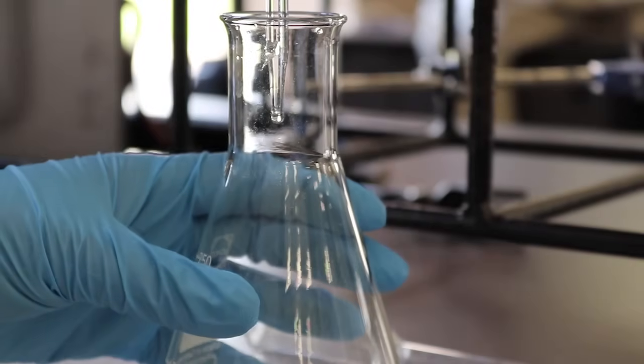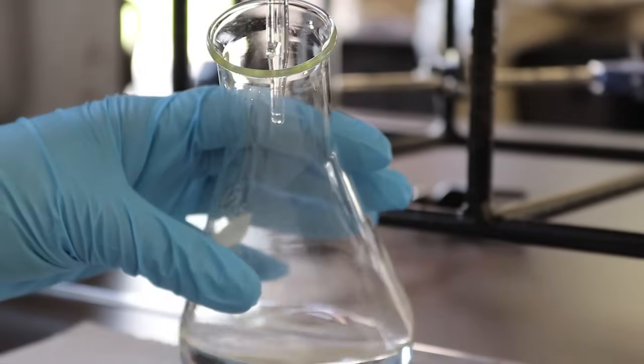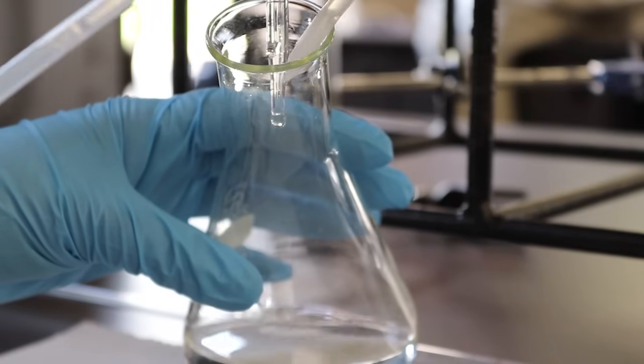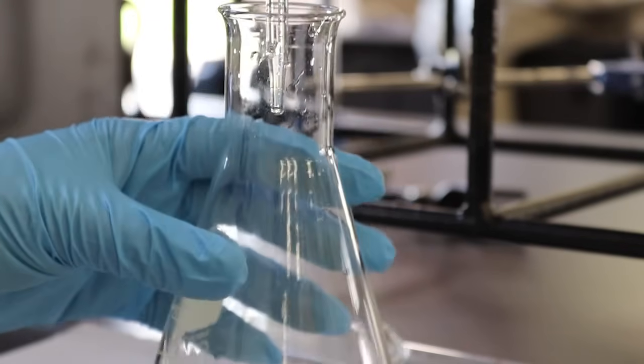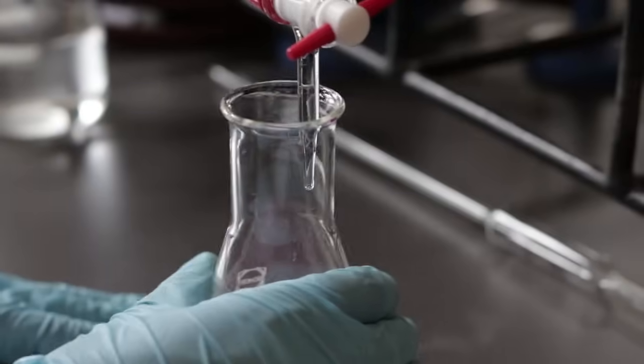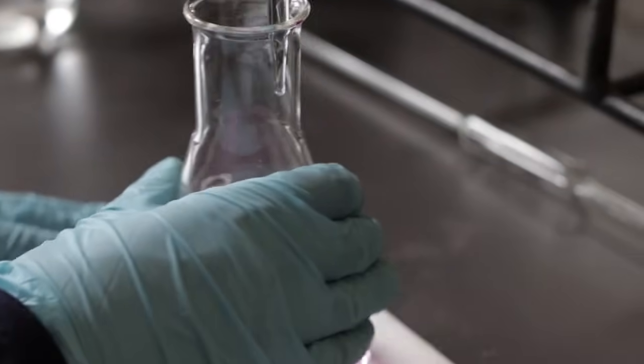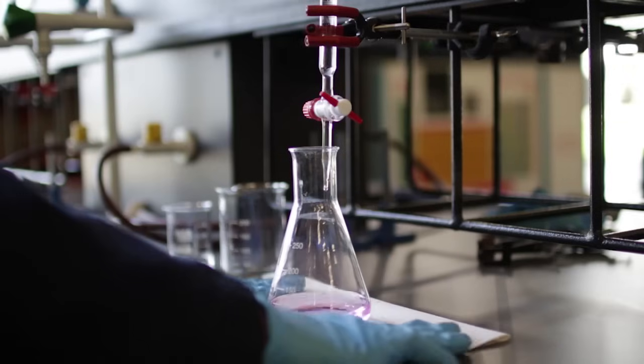If there is a droplet hanging on the tip of the burette, wash the droplet into the flask using a wash bottle, especially when approaching the endpoint. Washing off the titrant will result in a more accurate and precise result.